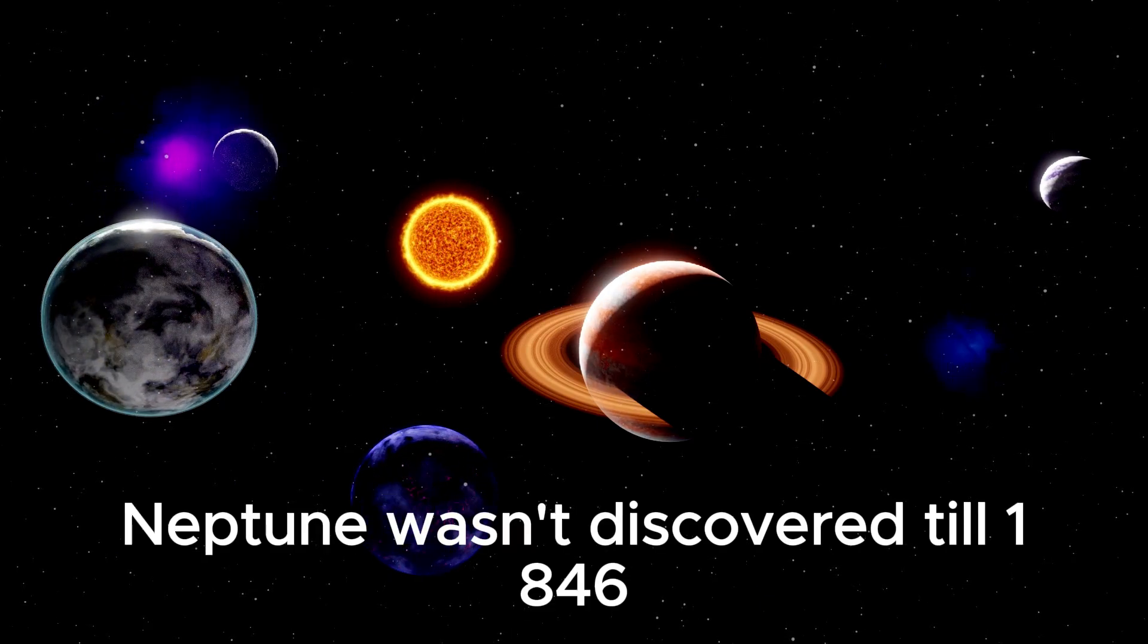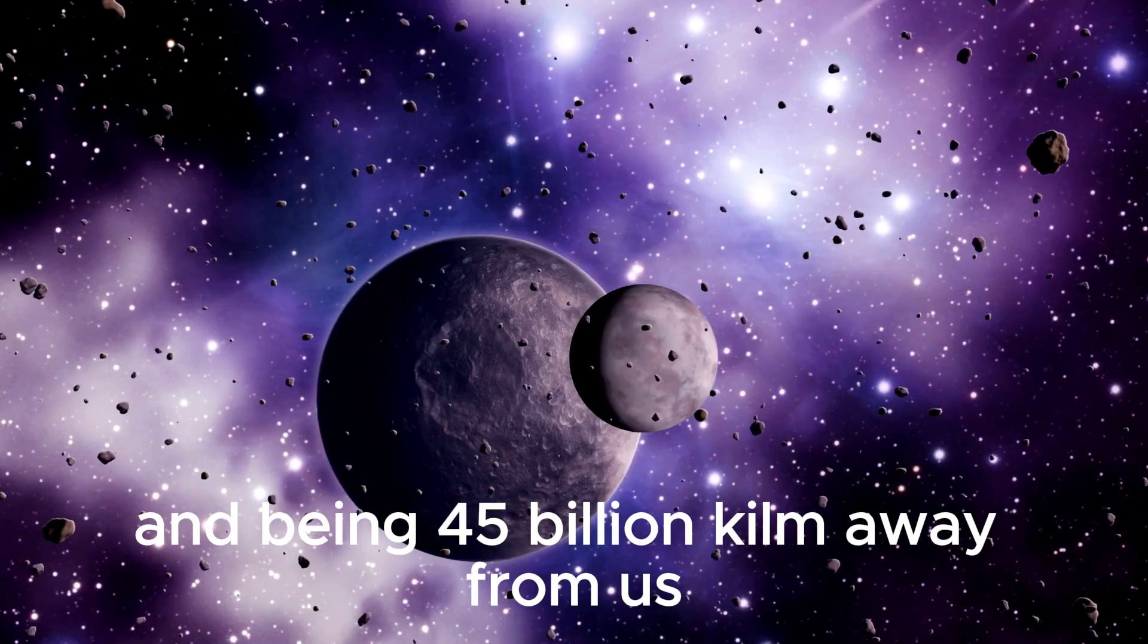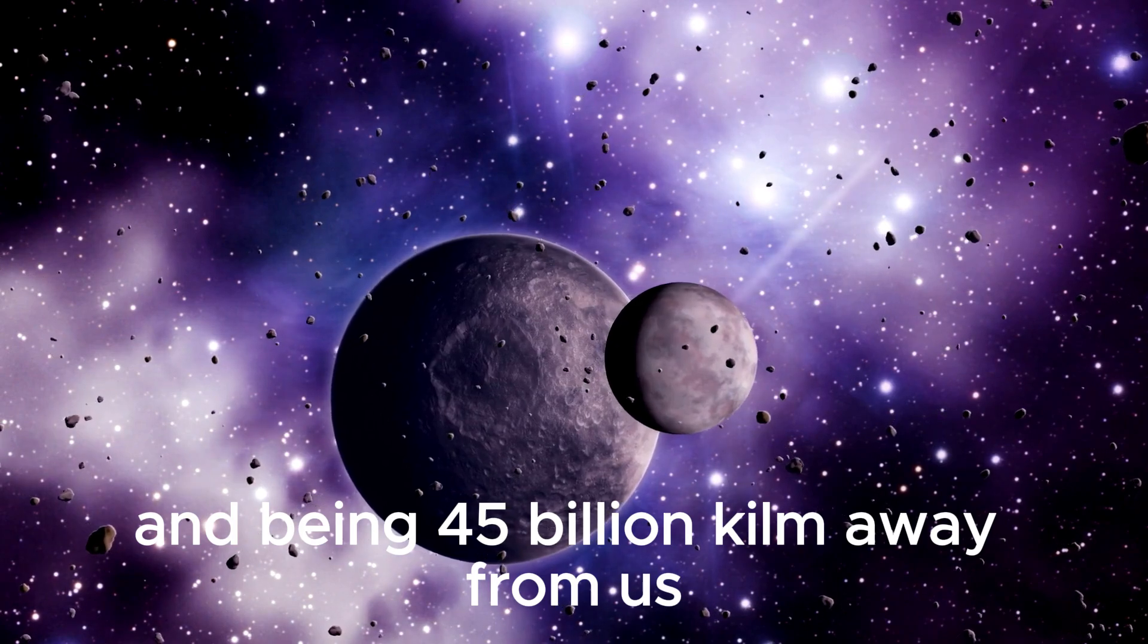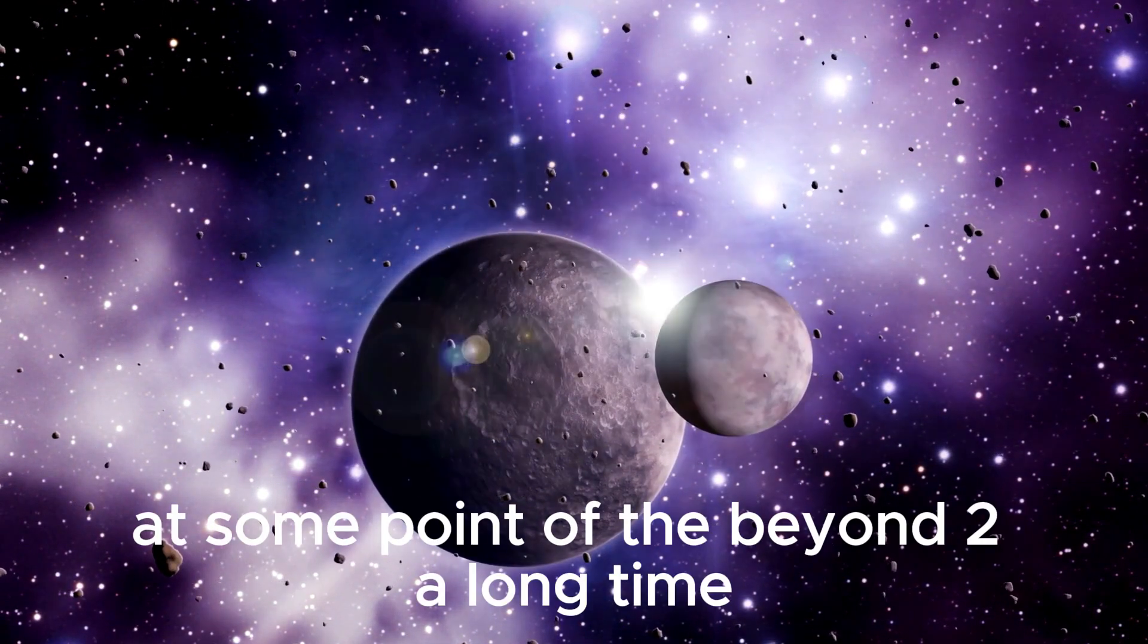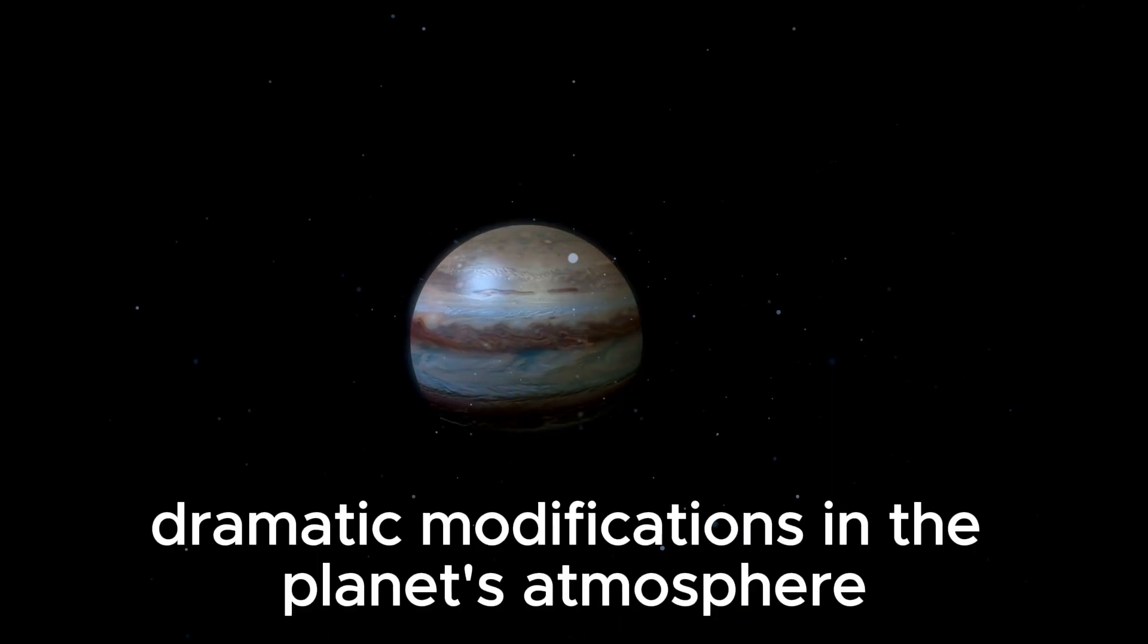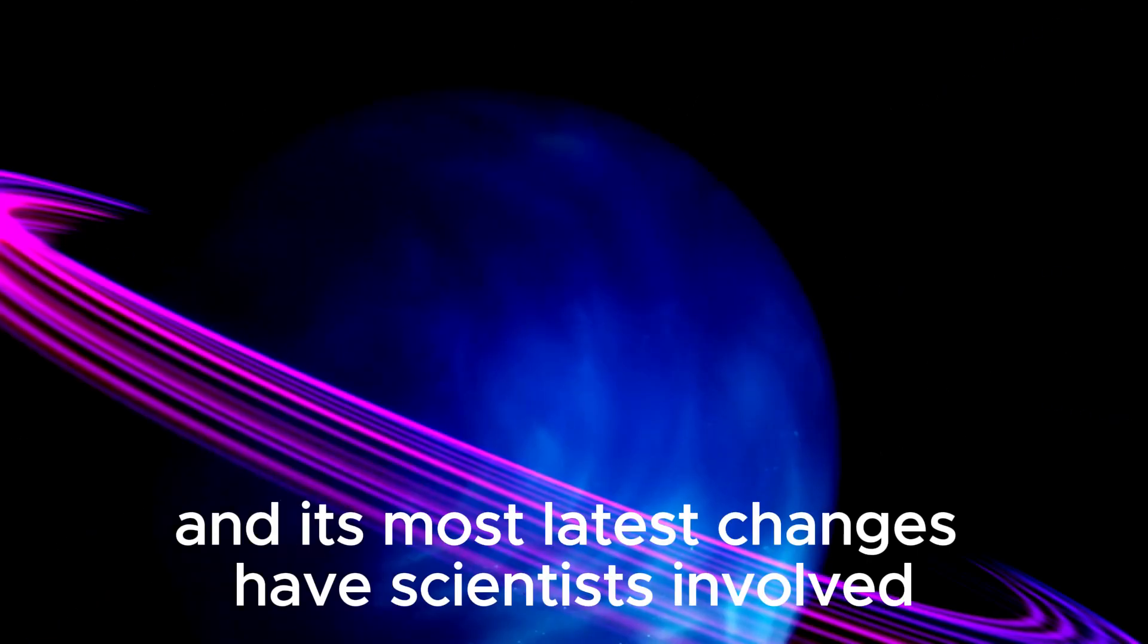Neptune wasn't discovered till 1846, no matter having a diameter four instances that of Earth and being 45 billion kilometers away from us, making it appear small and dim even to effective telescopes. At some point of the beyond two decades, scientists have seen dramatic modifications in the planet's atmosphere, and its most latest changes have scientists involved.